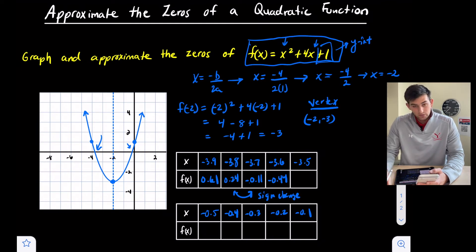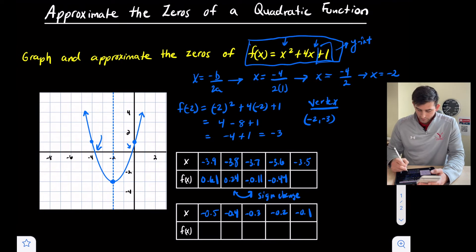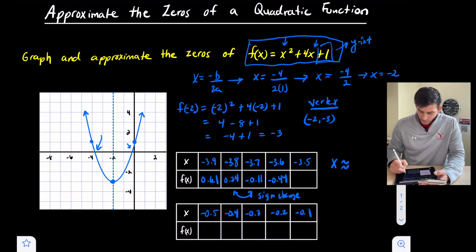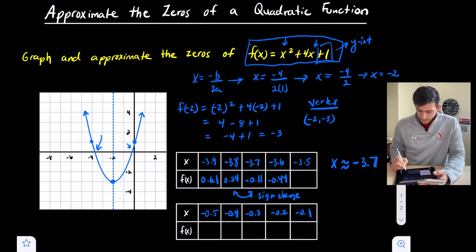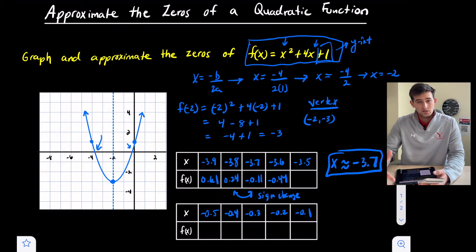Negative 3.7 gave us a y value of negative 0.11, and negative 3.8 gave us 0.24. Which y value is closer to zero? Negative 0.11. So we say x is approximately negative 3.7, because that's where the sign change occurred and its y value was closer to zero than the y value at negative 3.8.